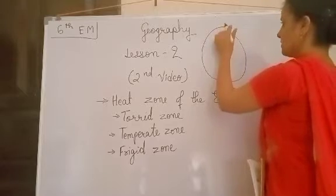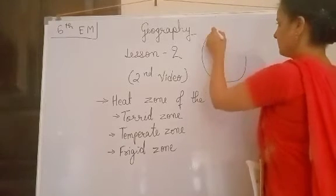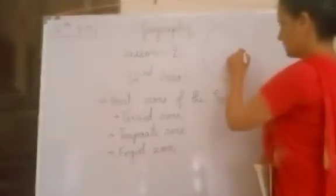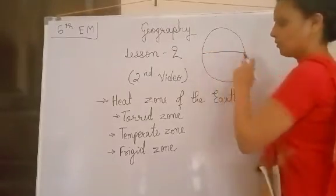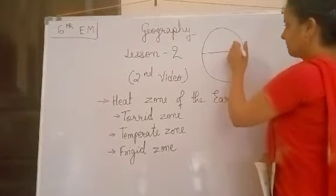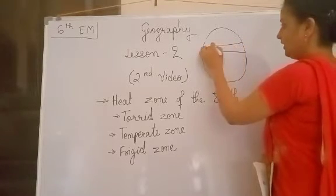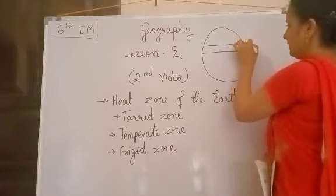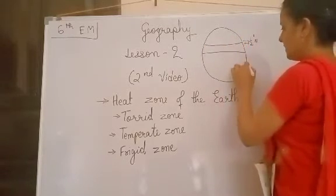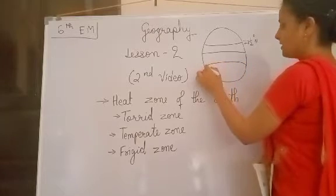Yesterday also we saw this. This is the equator from the center. Now after this center, at 23.5 degrees north, there is one imaginary line.